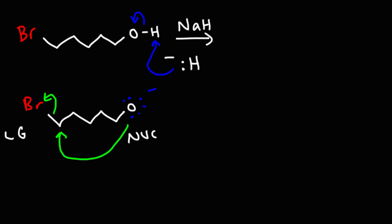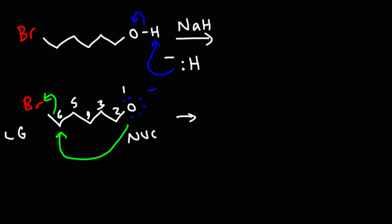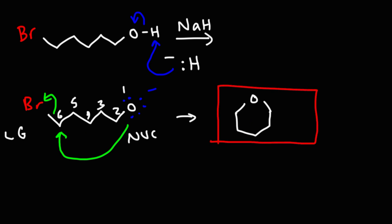Whenever you have these intramolecular reactions, you're going to get a ring. If we count the carbon atoms and the oxygen — one, two, three, four, five, six — we're going to get a six-membered ring. What we have here is a cyclic ether. So that's the answer for this problem — that is an intramolecular SN2 reaction.